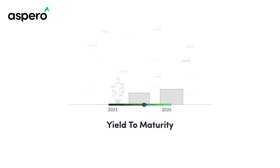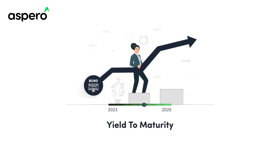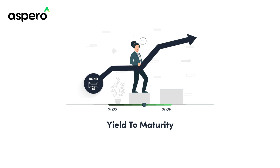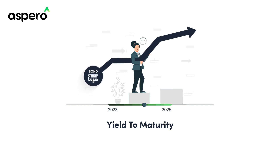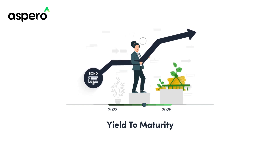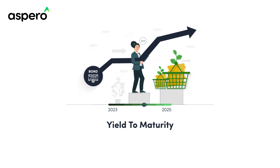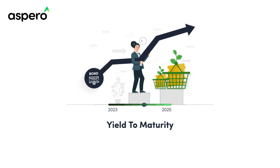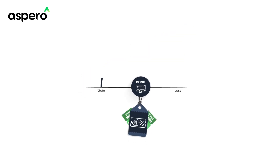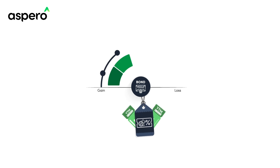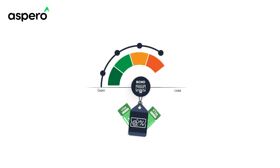Now let's dive into Yield to Maturity, or YTM. YTM goes beyond just the coupon rate and encompasses the total return you can expect from a bond if you hold it to maturity. YTM factors in coupon payments and any potential capital gains or losses arising from changes in the bond's market value over time.